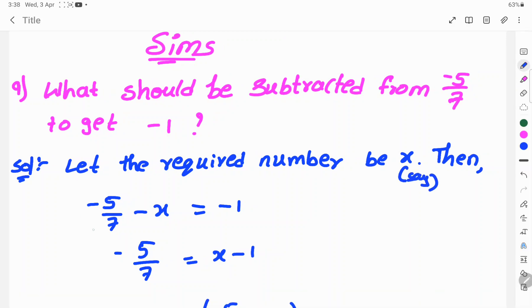Then minus 5 by 7 minus x, because here subtracted, is equal to minus 1. Minus 5 by 7 is equal to x minus 1.